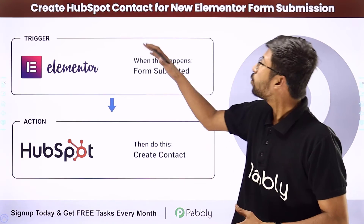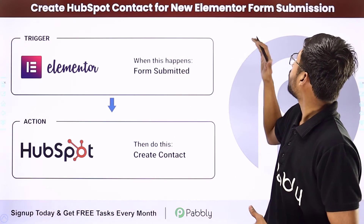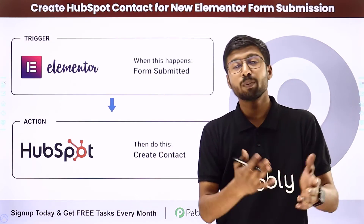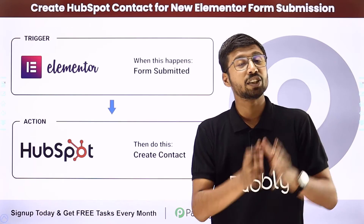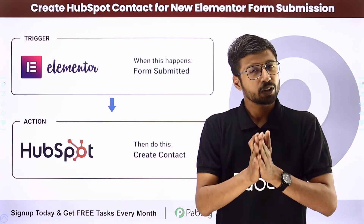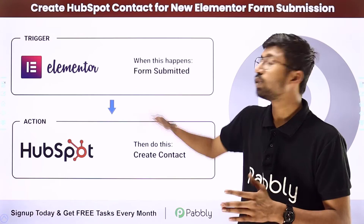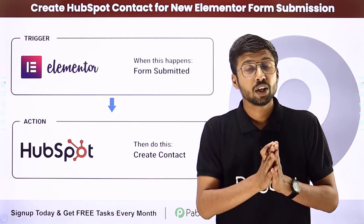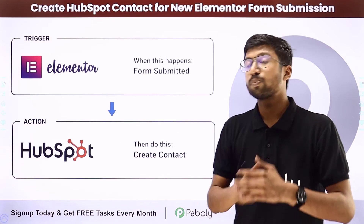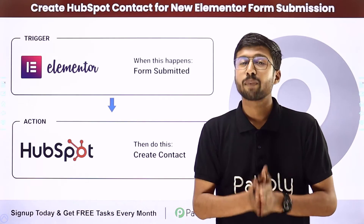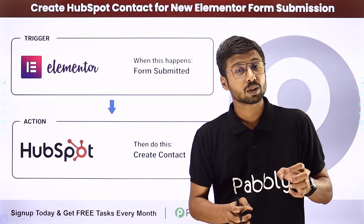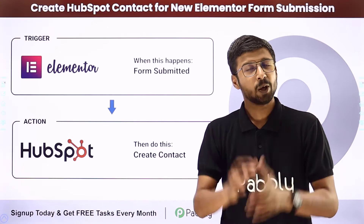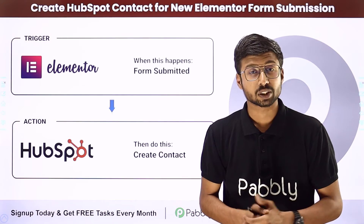In this video we are going to learn how to create a HubSpot contact for a new Elementor form submission. Suppose you are using Elementor form and created some kind of online form and added it into your website. Now you want that whenever you receive a new form submission, using the same details entered by the user, you want to add that person as a contact in HubSpot. But the manual process is very repetitive and time-consuming, so in this video we will see how you can automate this process.